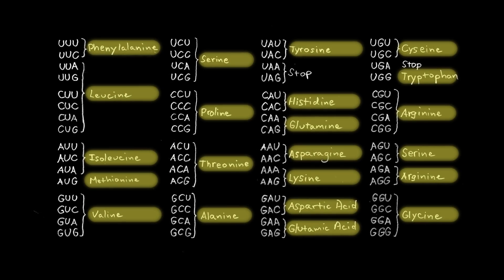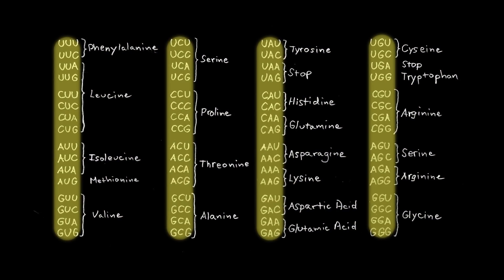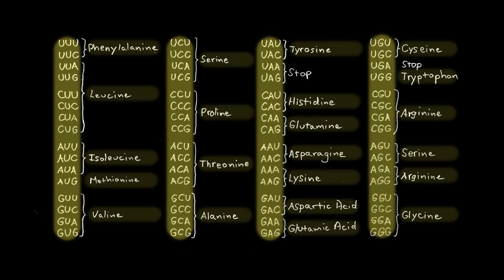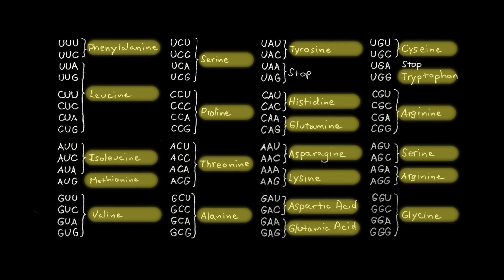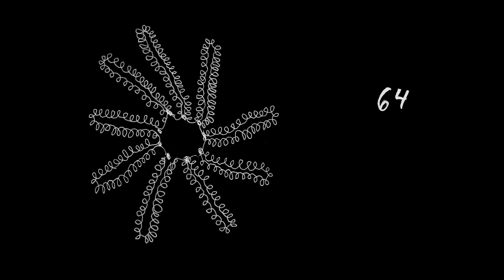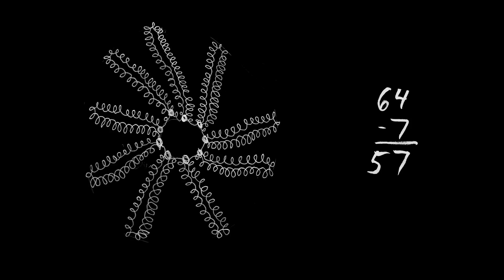There are 20 amino acids and 64 codons, and all natural living creatures use all 64 codons to encode the 20 amino acids. But we're constructing an E. coli genome that uses only 57 codons.